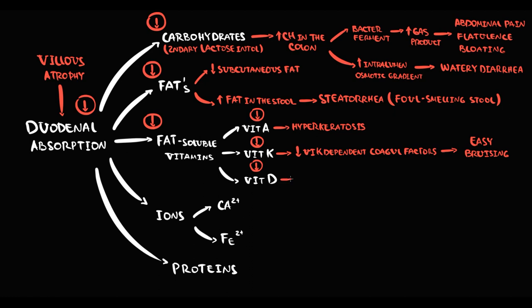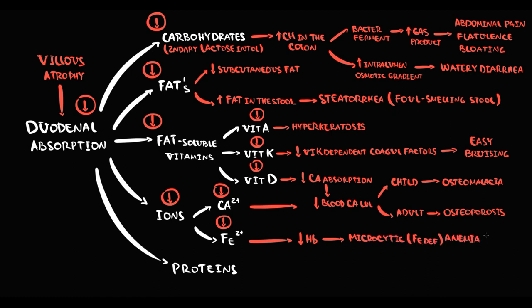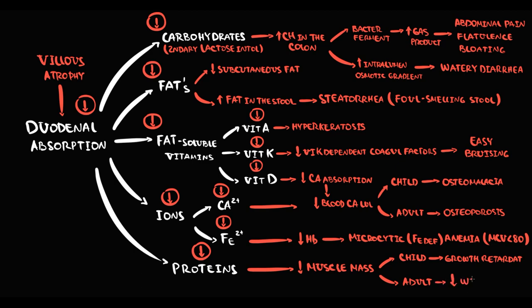Decreased vitamin D absorption causes vitamin D deficiency, which impairs calcium absorption, resulting in low blood calcium levels. Villus atrophy also directly disrupts calcium ion absorption as an additional factor lowering blood calcium. If celiac disease occurs in a child, it impairs normal bone structure formation, manifesting as osteomalacia. Iron absorption is also reduced; without iron, hemoglobin production falls, usually causing microcytic anemia. Decreased protein absorption causes reduced muscle mass, growth retardation in children, and weight loss in adults.